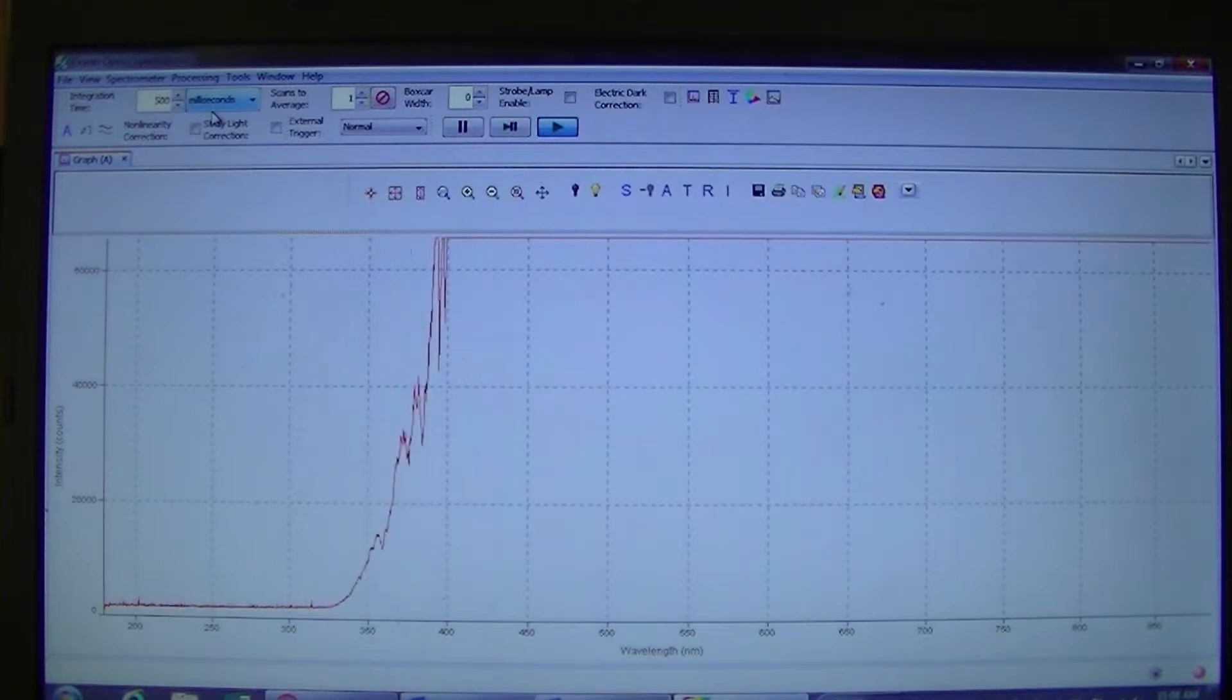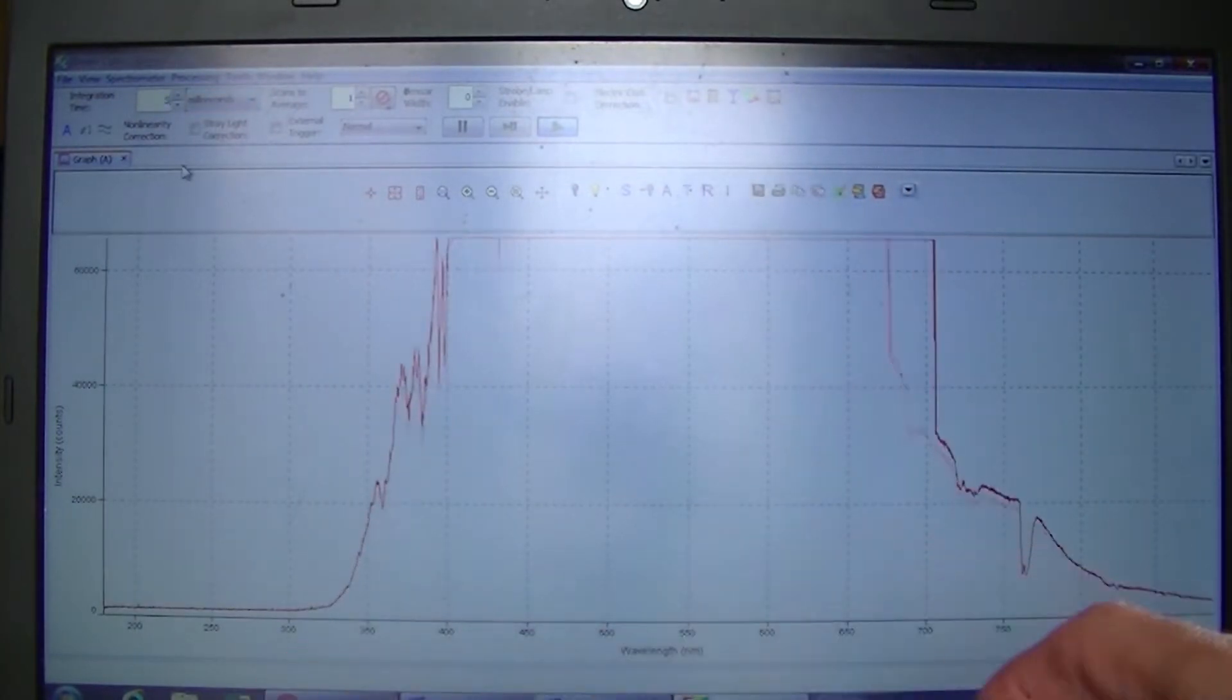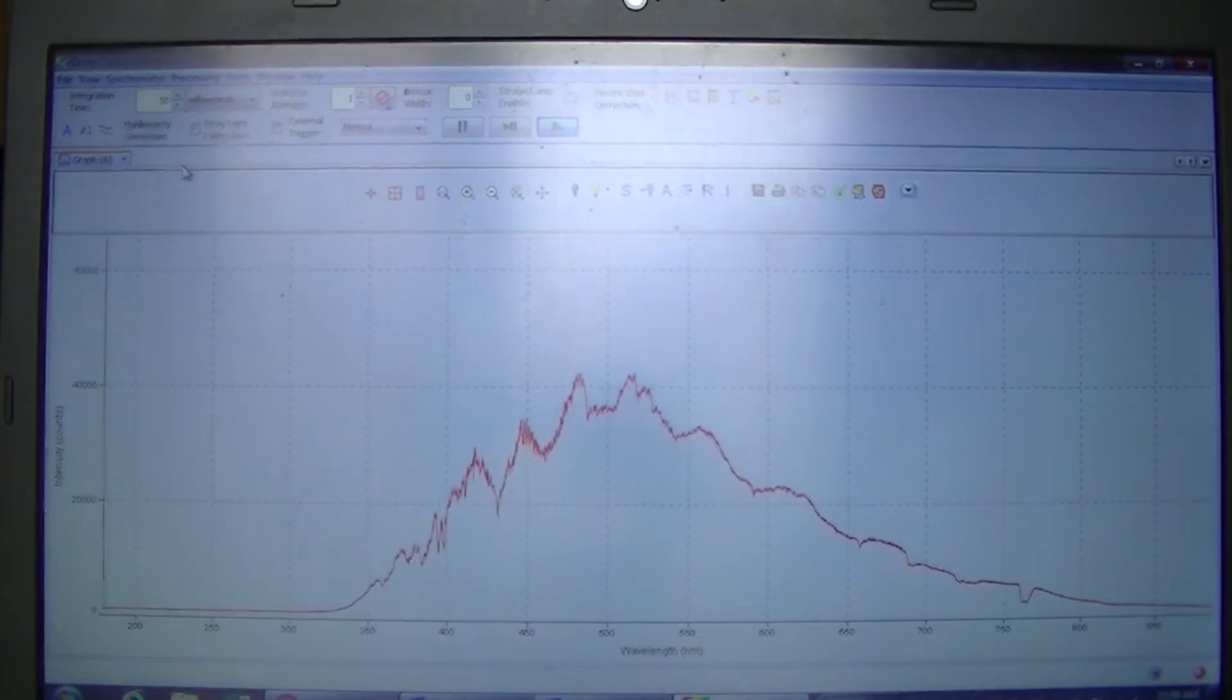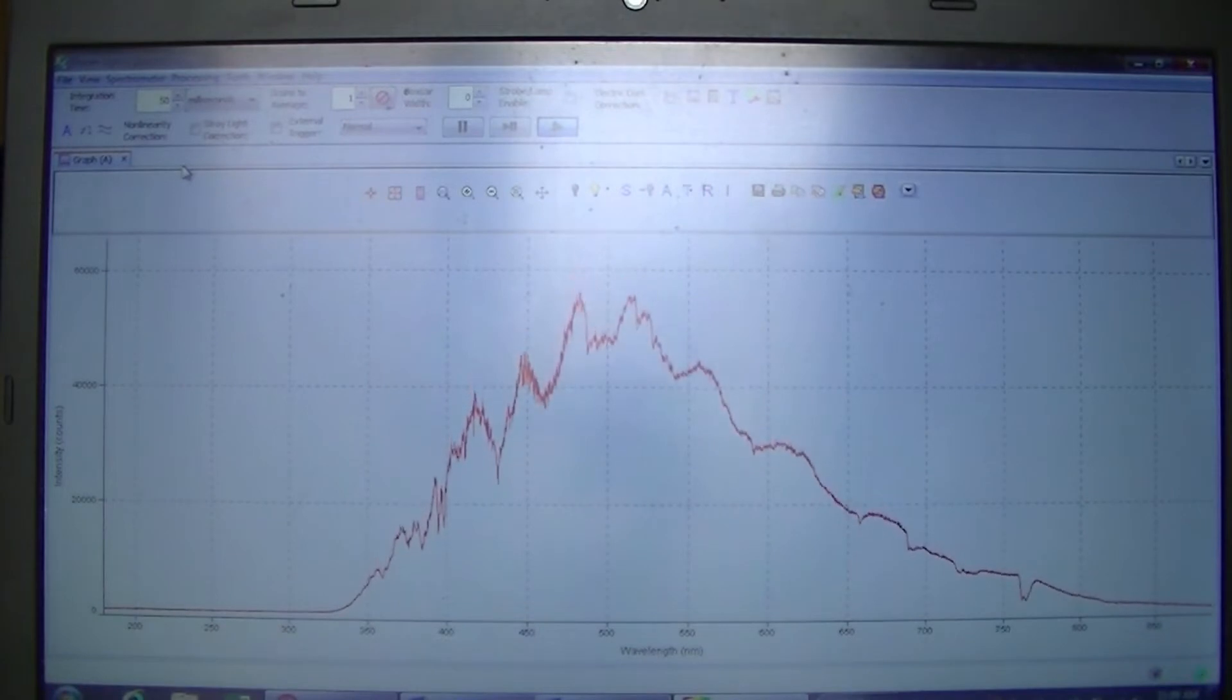Now just for fun, I'm going to measure the light coming from the sun. You can see that I've opened the curtains in my room where I'm filming to let in some sunlight. You can see that from the glare on my computer. Look at what happens when I point the fiber optic at the sun. Notice that the sun gives off a whole range of colors, all the colors of light.